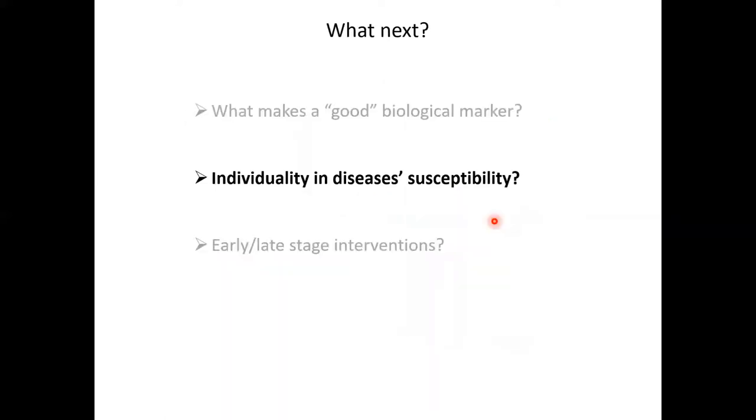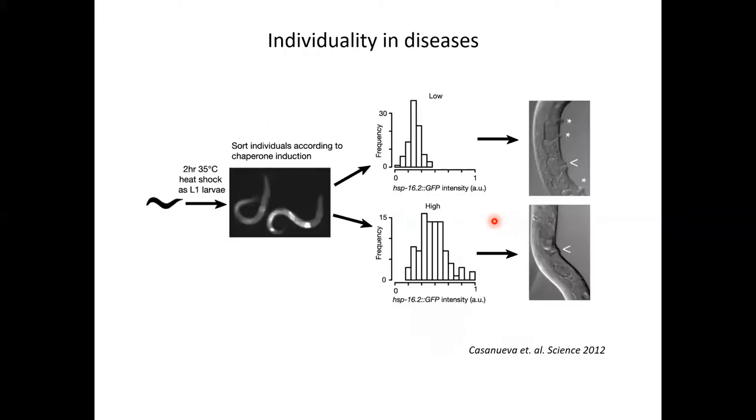Similarly to the individuality in lifespan in healthy aging individuals, a valid question would be whether there is individuality in the susceptibility to diseases. And this is a great study where they use the predictive power of the HSP 16.2 GFP reporter. And now instead of lifespan, they use the heat shock induced expression of this probe to look at inter-individual variability, and how this would affect the outcome of introduced mutations that show a phenotype later in life. And what they saw was that worms that had lower levels of HSP 16.2 induction were more affected by the LIN31 mutation that induces the formation of this ectopic valve now in adults.